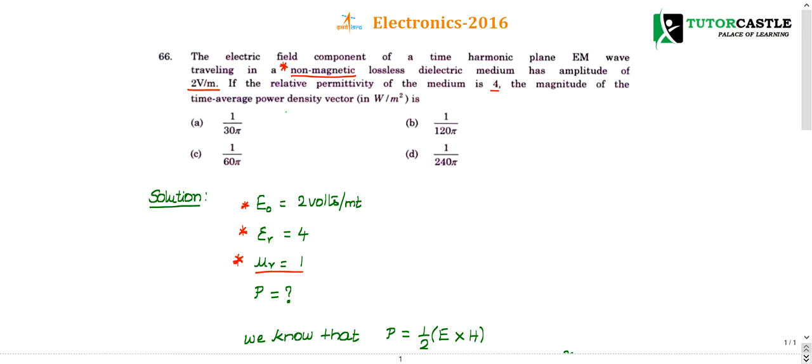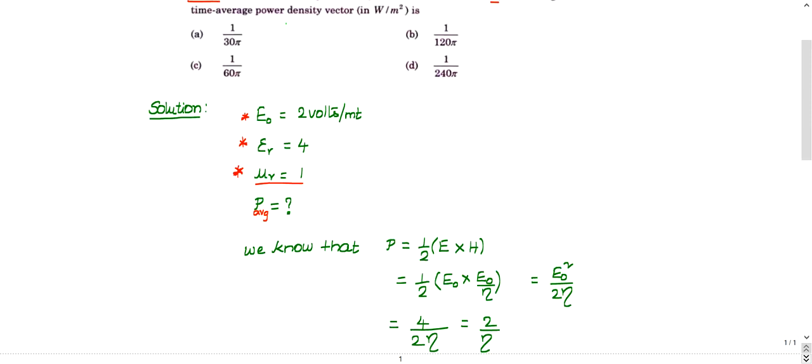Now he is asking what is the average power? Average time average power density. Power density is asking. Power density formula is given as average power density. Average indicates 1 by 2. Directly with the question I am going average 1 by 2. Power density is given by multiplication of electric field with magnetic field. You should know this formula. And one more formula you should know. Second formula is called η characteristic impedance is nothing but E by H.